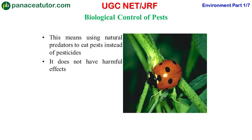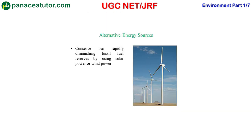Next is biological control of pests — it means using natural predators to eat pests instead of pesticides. We have studied that excessive pesticide use creates many problems, so by using natural predators we can reduce pollution problems. Another method is to use alternative energy sources like solar power or wind power. These are some methods by which we can save our environment.